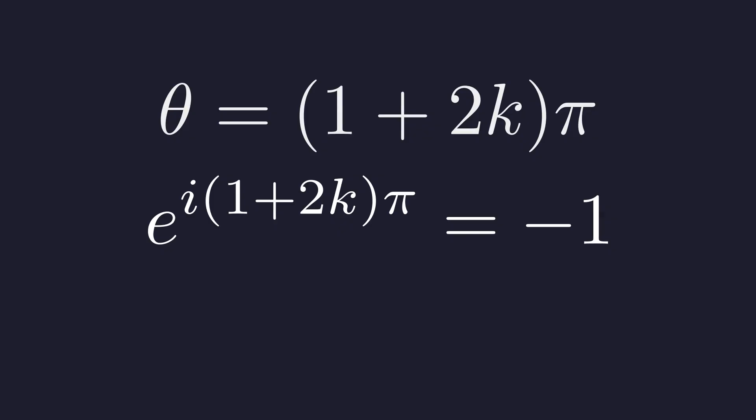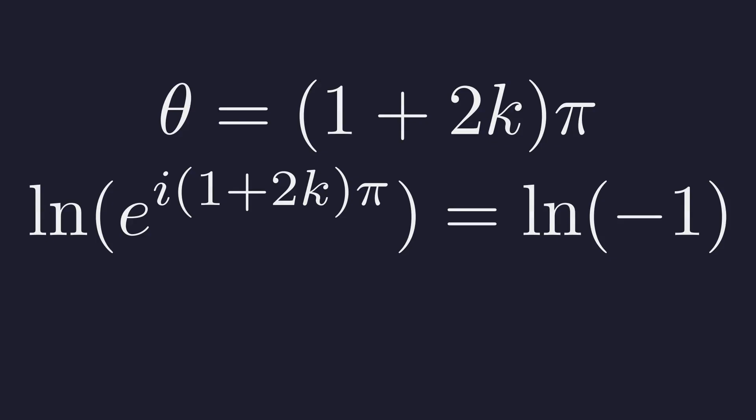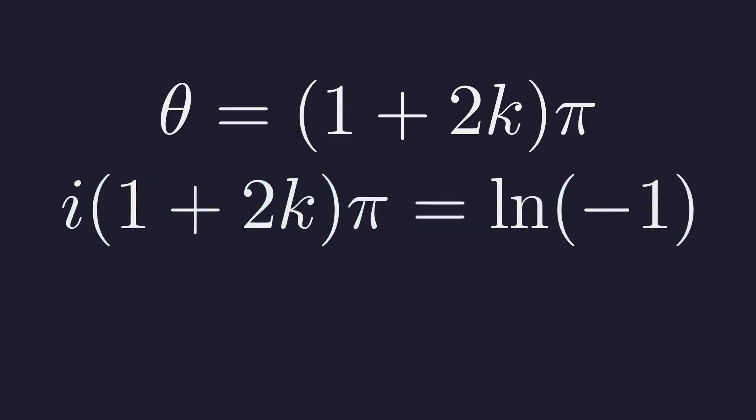Substituting this general angle into Euler's formula, we find that e to this entire power is always equal to negative 1 for any integer k. Now, we follow the exact same logic as before. We'll take the natural log of both sides. This gives us the natural log of e to the power of i times the quantity 1 plus 2k pi on the left. And, once again, the logarithm and the exponential cancel. This reveals the complete picture.